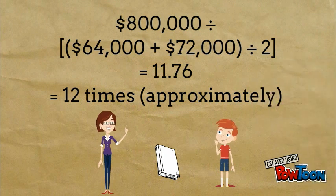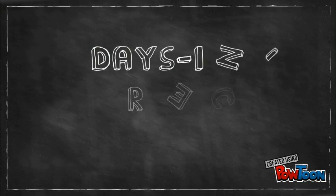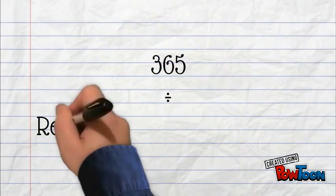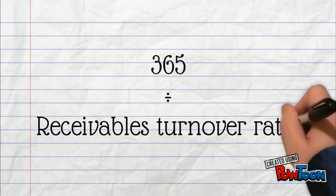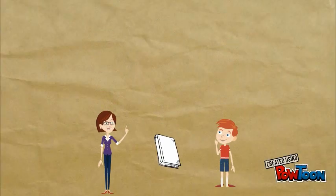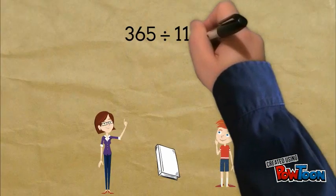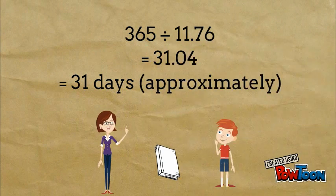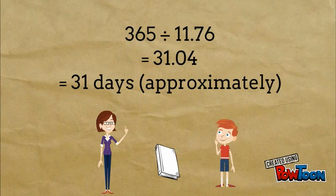The receivables turnover ratio is sometimes difficult to interpret, so it is often converted to the days and receivables ratio, which expresses in days how long it takes the company to generate and collect its receivables. The formula for this is 365 divided by the receivables turnover ratio. Therefore, Educare's days and receivables ratio is 31.04, which means it takes the company approximately 31 days between selling an item and collecting the receivable.